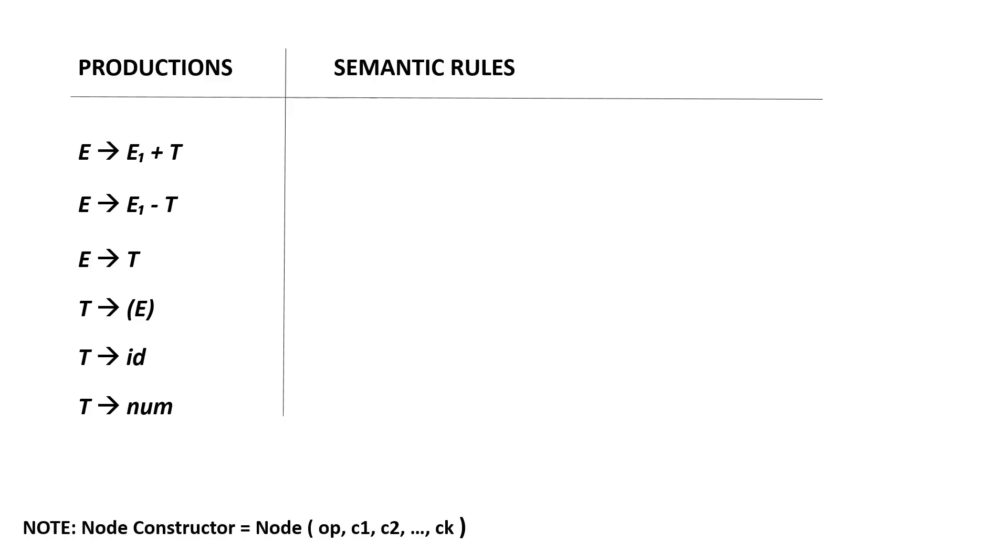Remember that the node constructor equals node, open parenthesis, operator, then the child nodes, close parenthesis. Being that said, e derives e1 plus t will be e dot node equals new node, open parenthesis, plus, e sub 1 dot node, and t dot node, close parenthesis.